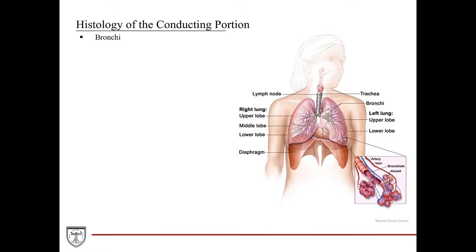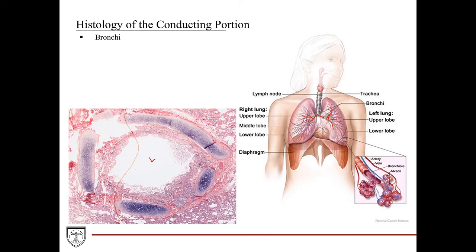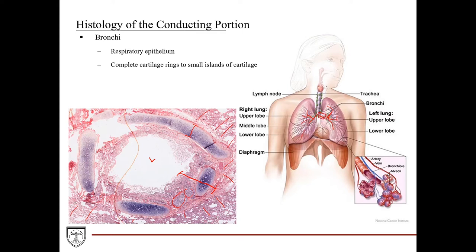The trachea eventually branches into the primary bronchi, which branch into secondary bronchi, then tertiary, and so forth — continuing to divide into smaller and smaller branches. Here's a histological section through a bronchus showing the lumen and surrounding lung parenchyma. The bronchial wall is comprised of respiratory epithelium lining the lumen, a lamina propria with glands, and deep to that, hyaline cartilage. This cartilage varies in shape by bronchi size: the primary bronchus has a complete circular ring of hyaline cartilage, while smaller distal bronchi have only a small plate or island of cartilage.